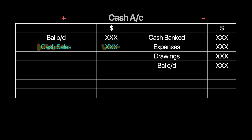Businesses receive cash sales and then bank a certain amount. When cash is deposited into the bank, the bank account is debited and the cash account is credited — this is called 'cash banked' and goes on the credit side of the cash account. Any cash expenses paid and cash drawings also decrease cash, and the closing cash completes the account. We use this to find the missing figure: cash sales.